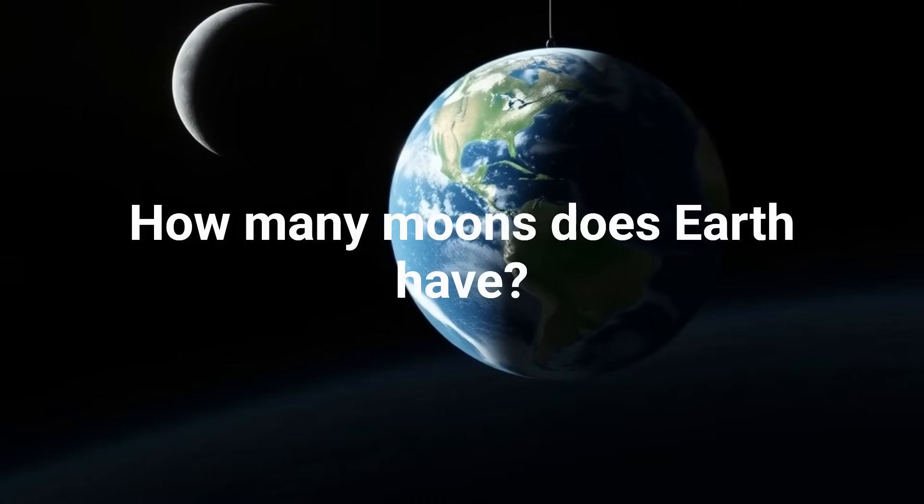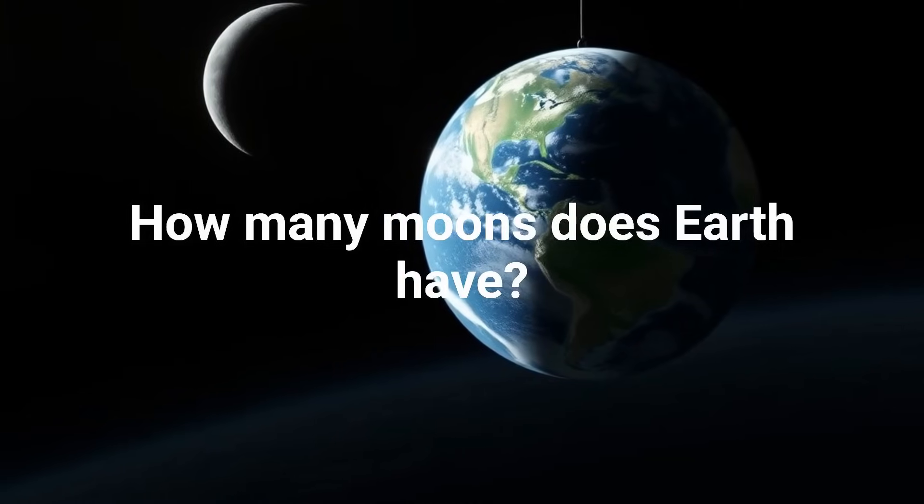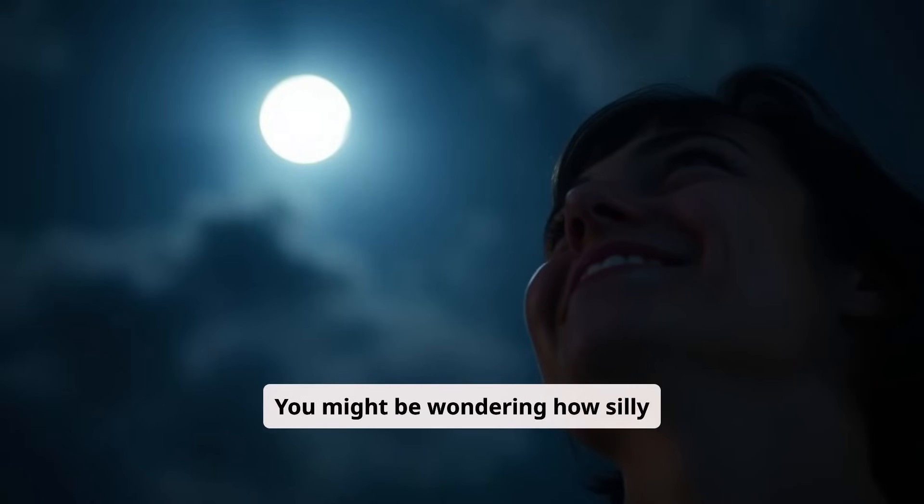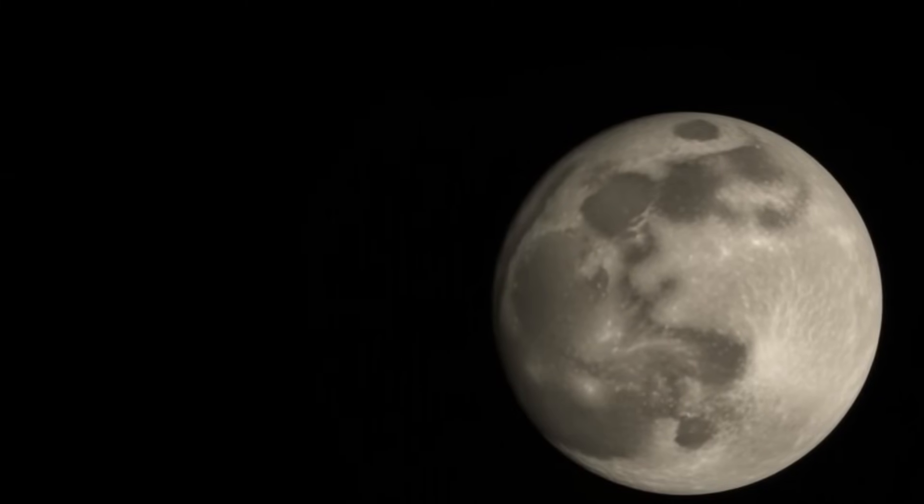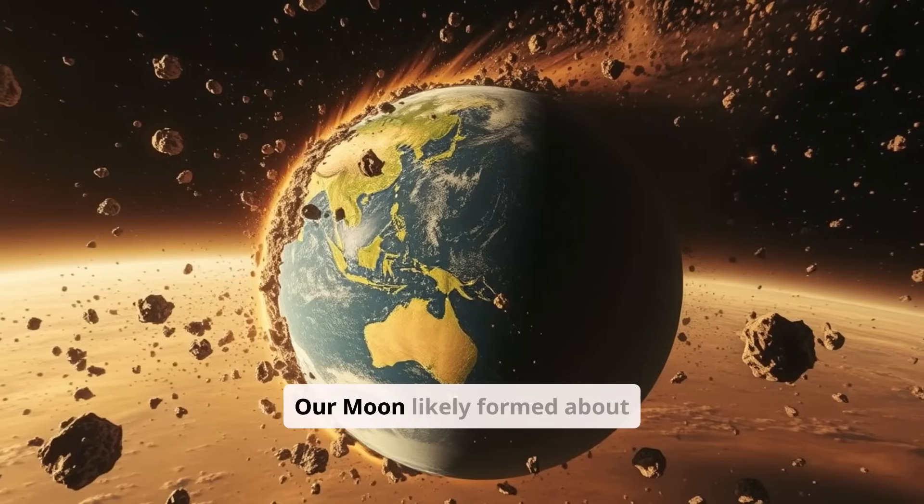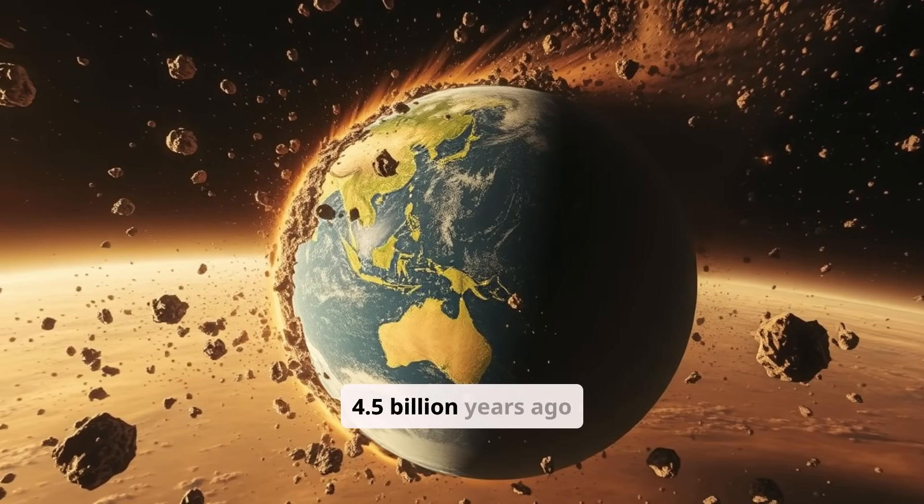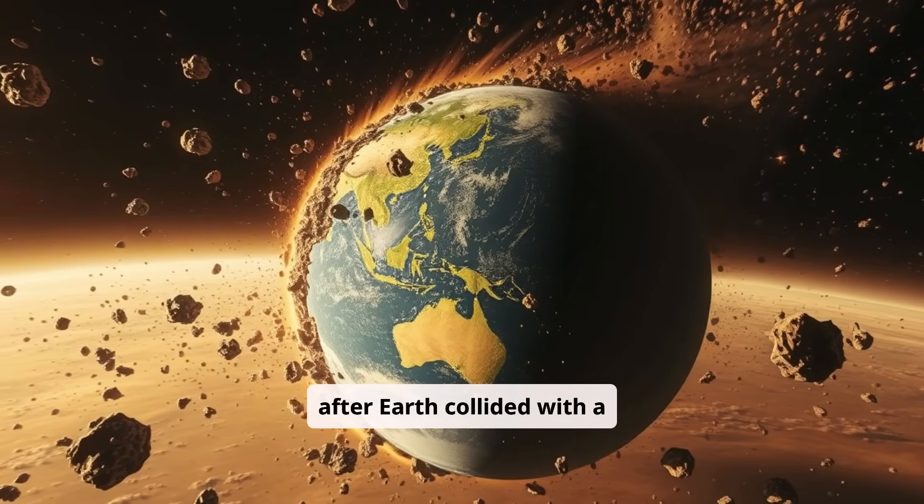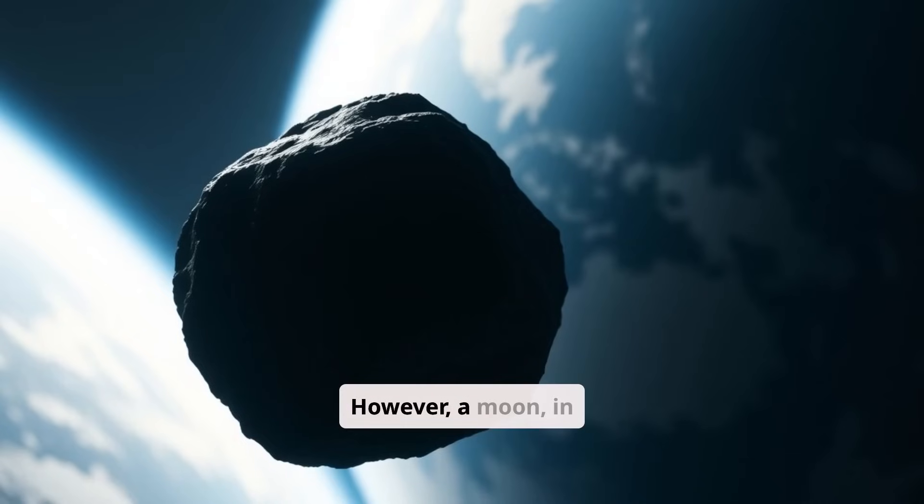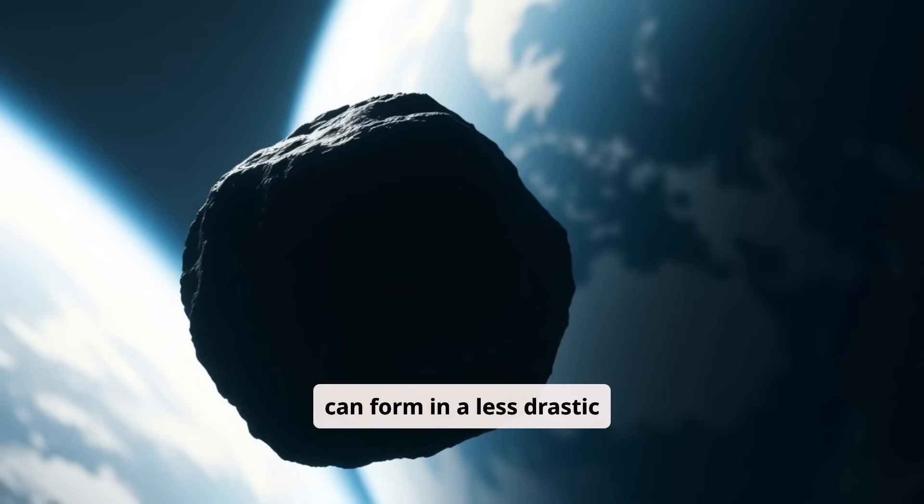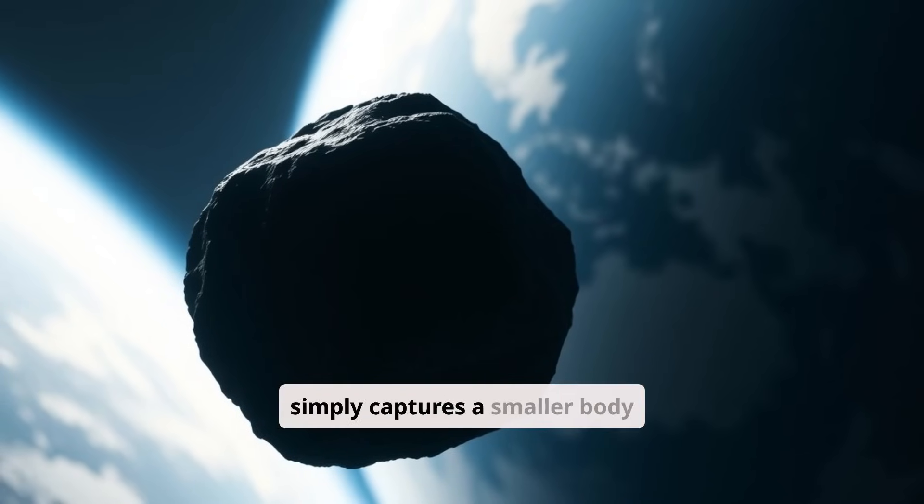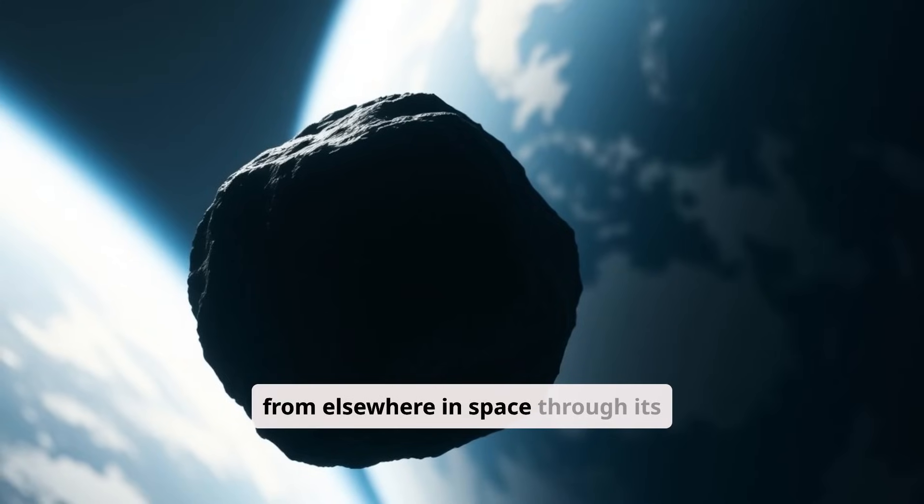How many moons does Earth have? You might be wondering how silly that question is when we have the answer in front of us every night. Our moon likely formed about 4.5 billion years ago after Earth collided with a protoplanet called Theia. However, a moon, in the sense of a natural satellite, can form in a less drastic way. The planet simply captures a smaller body from elsewhere in space through its gravity.